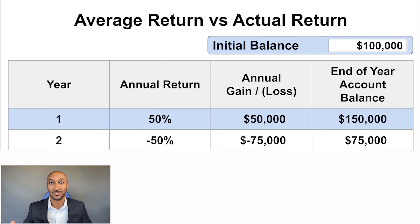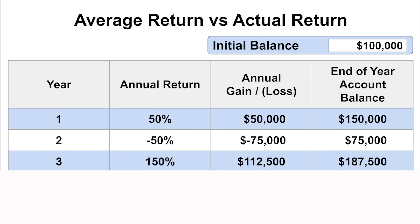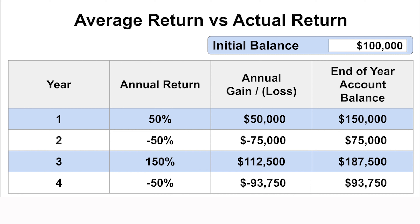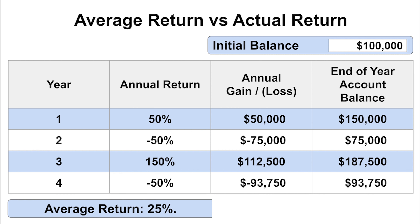In year two, our investment dropped 50%, so that year we lost $75,000, bringing our balance to $75,000. In year three, our investment grew by 150%, which is $112,500, bringing our balance up to $187,500. Then in year four, we lost another 50%, losing $93,750 that year and bringing our balance down to $93,750. To calculate the average return, you add up 50%, negative 50%, 150%, and negative 50%, which gives you 100. Then divide by four years, leaving you with an average rate of return of 25% — and that's typically the number someone will quote you.